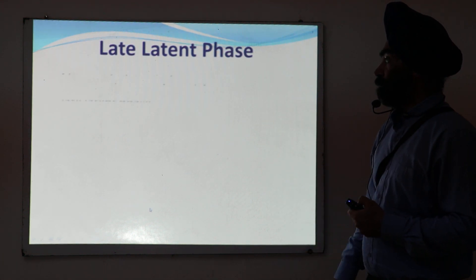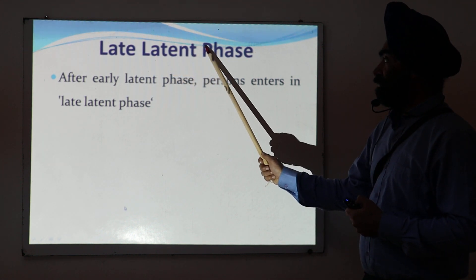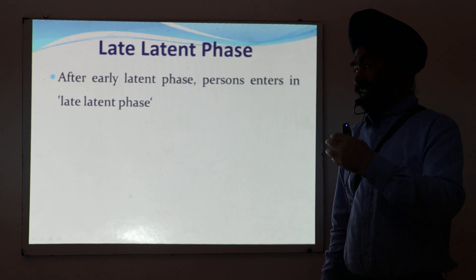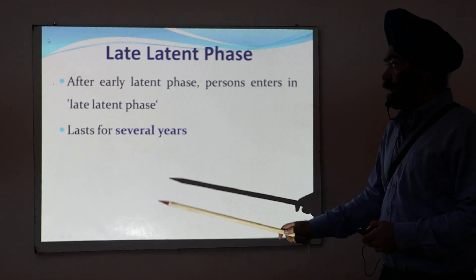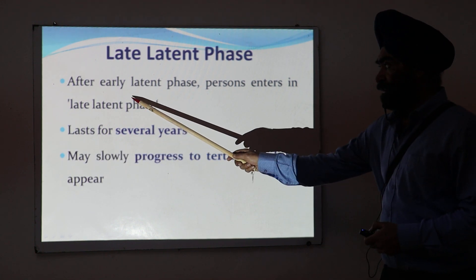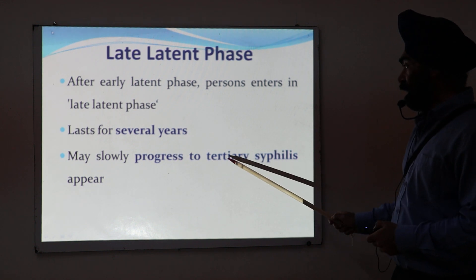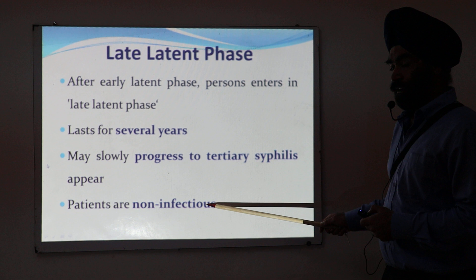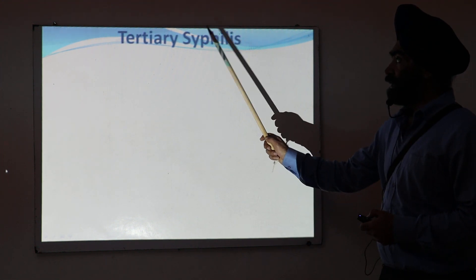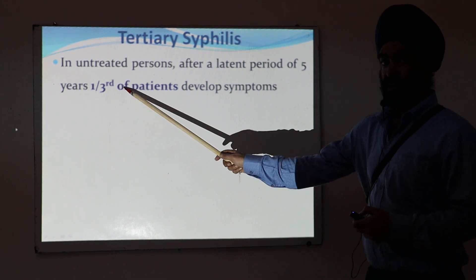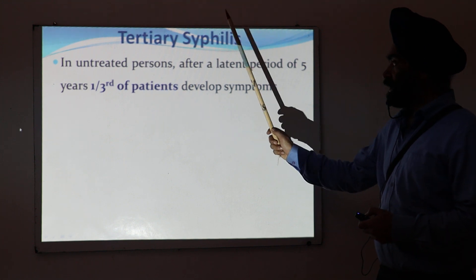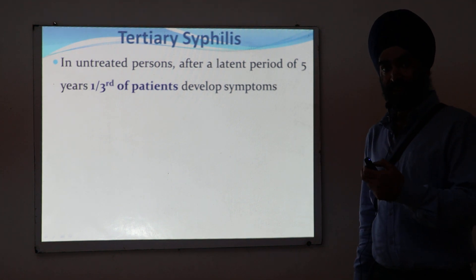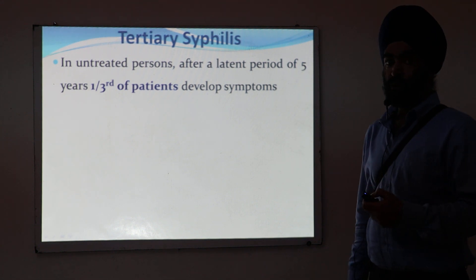Coming to the late latent phase: this appears after the early latent phase — so the sequence is secondary syphilis, then early latent, then late latent. The late latent phase may last for several years, after which it will progress into tertiary syphilis. In comparison to the early latent phase, in the late latent phase, patients are non-infectious. About one-third of untreated patients will progress to tertiary syphilis after approximately five years.